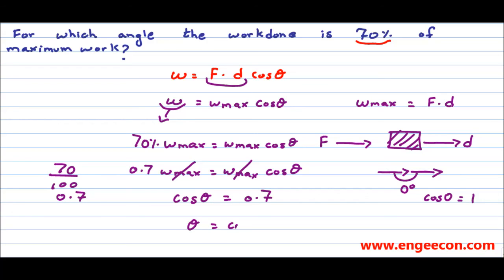We know that cos inverse of 0.7 is approximately equal to 45 degrees. So at 45 degrees, the work done is 70% of the maximum work.